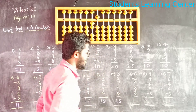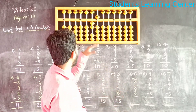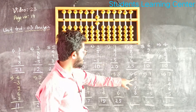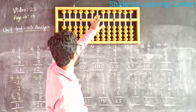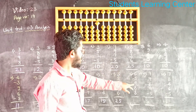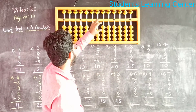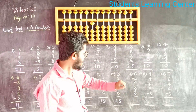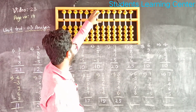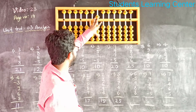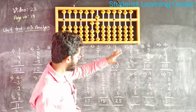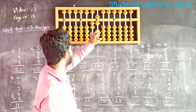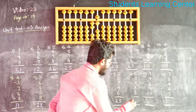Next question. Add 6, add 6, less 5. Add 9, add 10 less 1, add 8, add 10 less 2. Answer is 26.